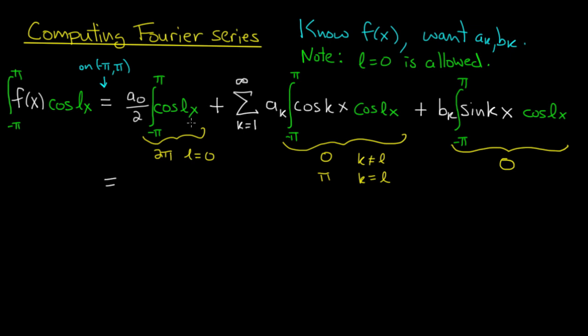For instance, if l is 0, then we get this guy is the only term which is non-zero, and it's equal to π times a_0. If l is 1, then just the first term here is the only one that's non-zero, and it's π times a_1. If l is 2, we get π times a_2, etc. So no matter what l is—l equals 0, 1, 2, 3, 4, etc.—this guy is equal to π times a_l.